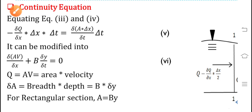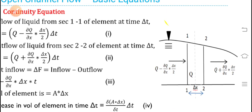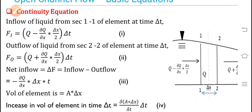Then, equating: the inflow of liquid from section 1-1 of the element at time delta t is given by: F = Q minus (∂Q/∂x)·(δx/2), multiplied by δt. The outflow similarly is: F = Q plus (∂Q/∂x)·(δx/2), multiplied by δt. Therefore, the net flow equals minus (∂Q/∂x)·δx·δt.